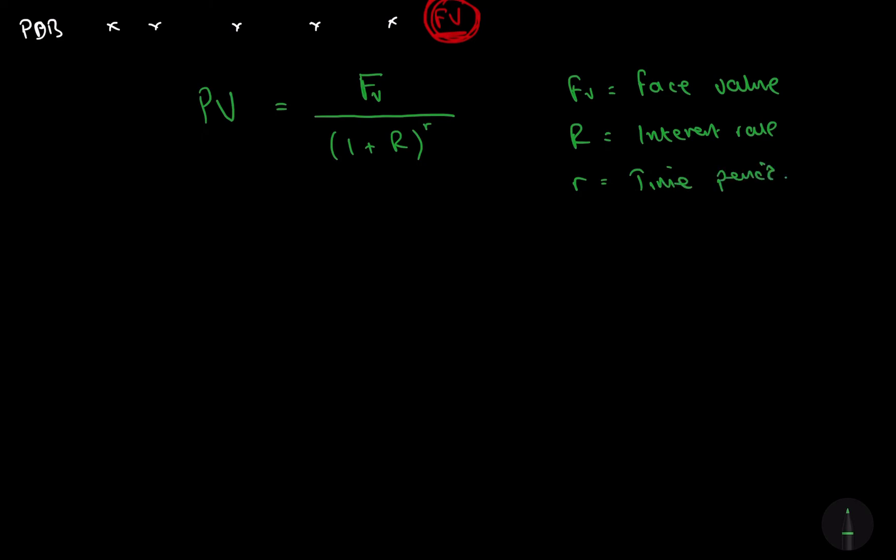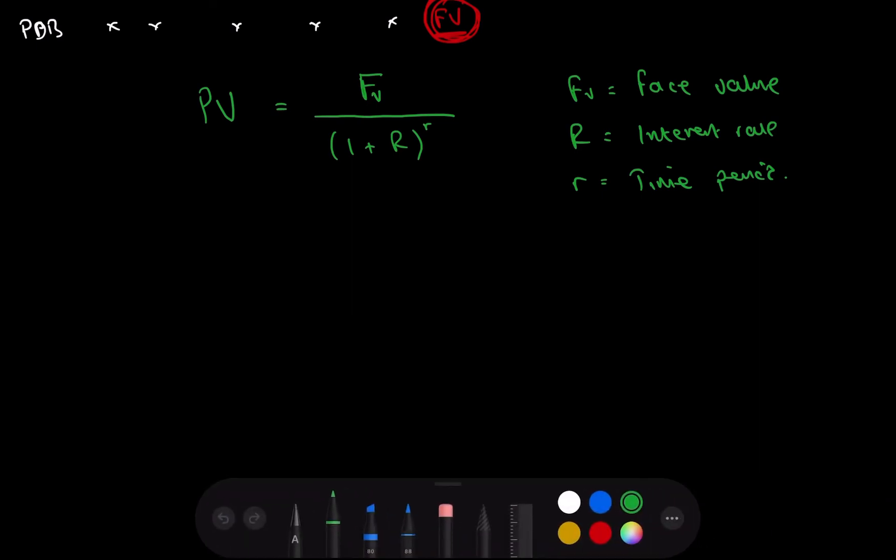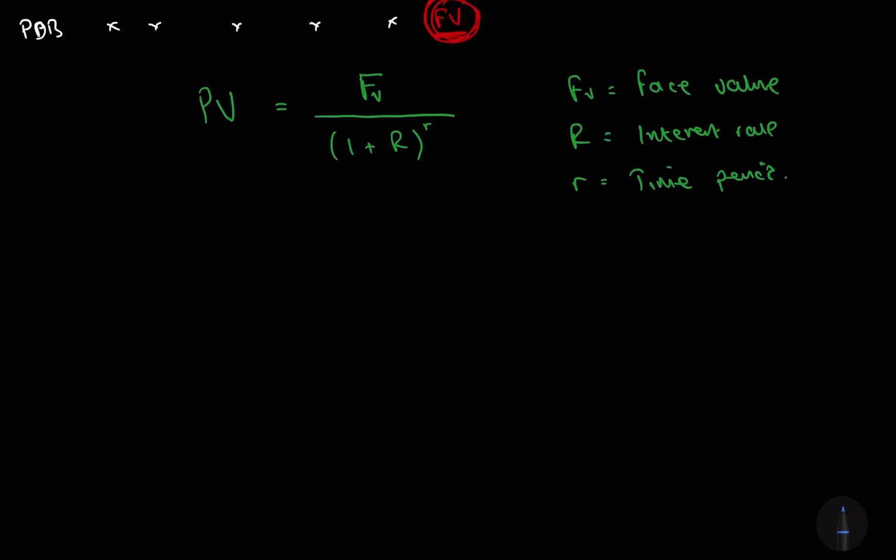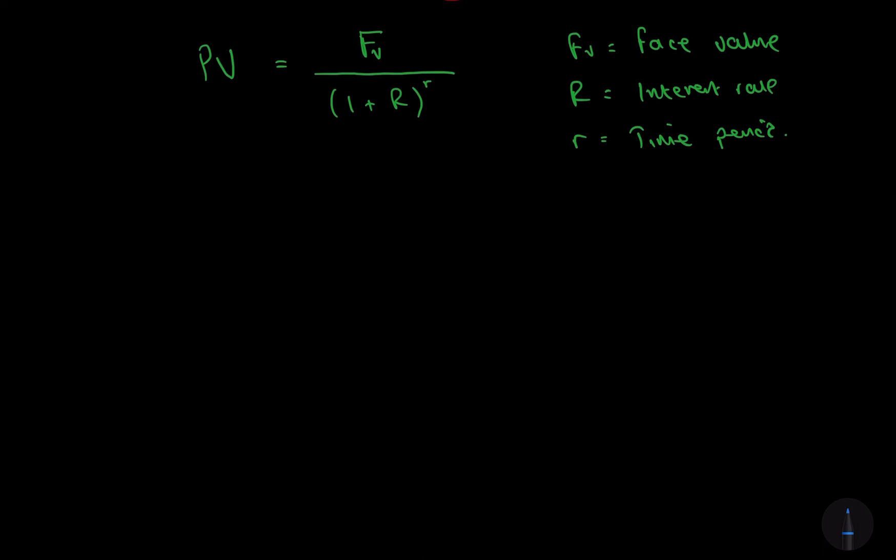So let's just suppose an example. I'll do this in blue. So let's suppose that we have an interest rate of 10%. And we have a face value of £1,000,000 that is going to mature in 20 years.